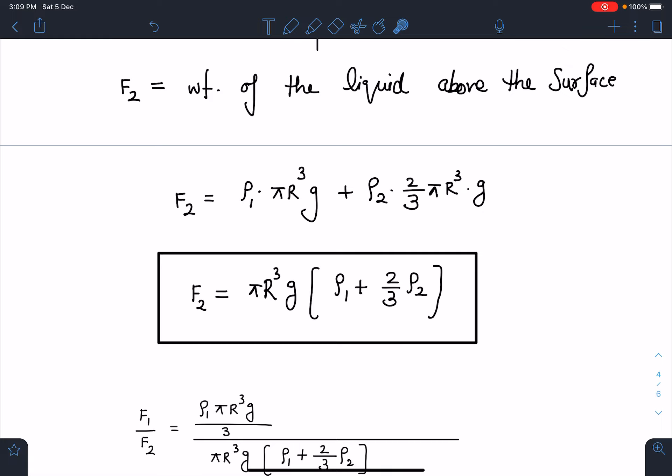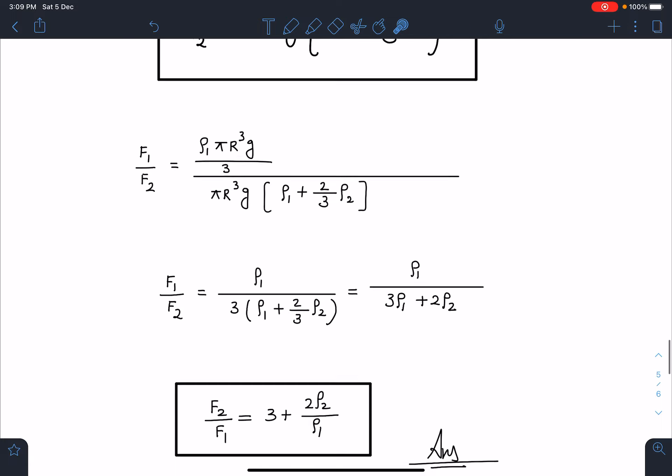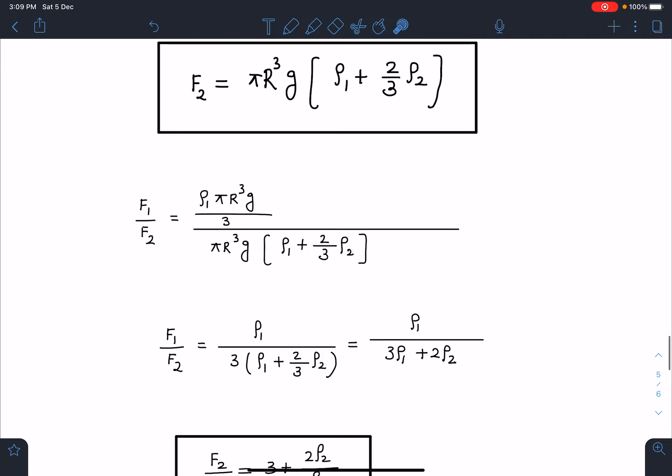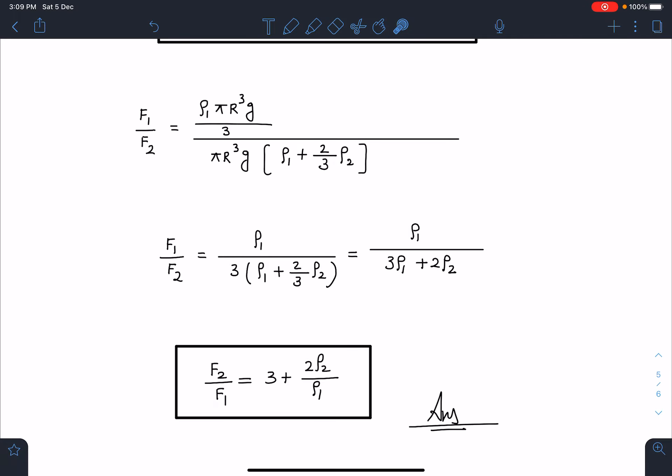I have to find out F2 by F1, so this F2 by F1 if you do the calculation it's very easy. I can just write 3 plus 2 rho 2 divided by rho 1. This is going to be the final answer for this problem.